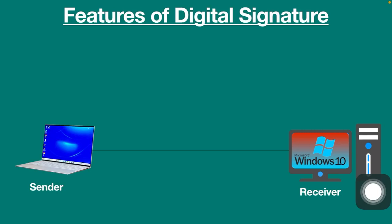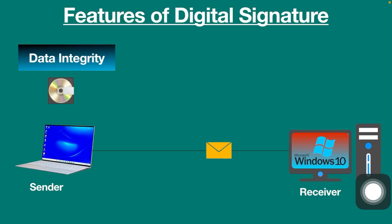The first feature is data integrity. With digital signatures, data integrity ensures that the message received by the recipient is exactly the same message sent by the sender.